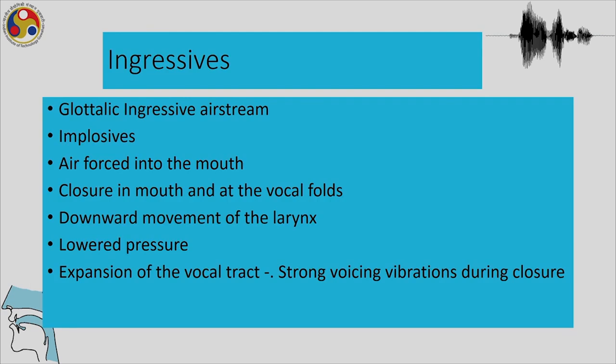To produce the glottalic egressive for ejectives, the air is going out of the mouth, but for ingressive the air has to be pushed in, resulting in a lowering of the glottis. We have seen ejectives and implosives; now we move on to the velaric airstream, which is used in the production of clicks.